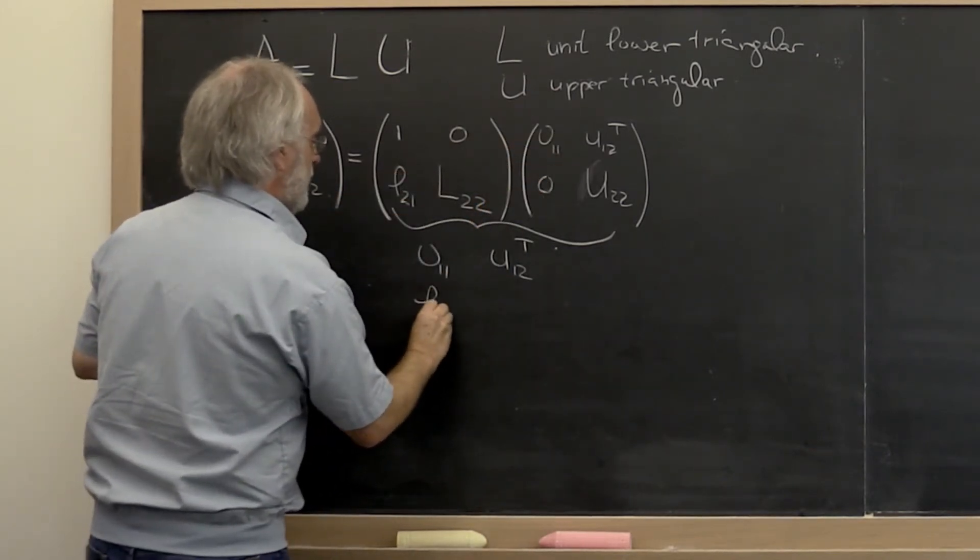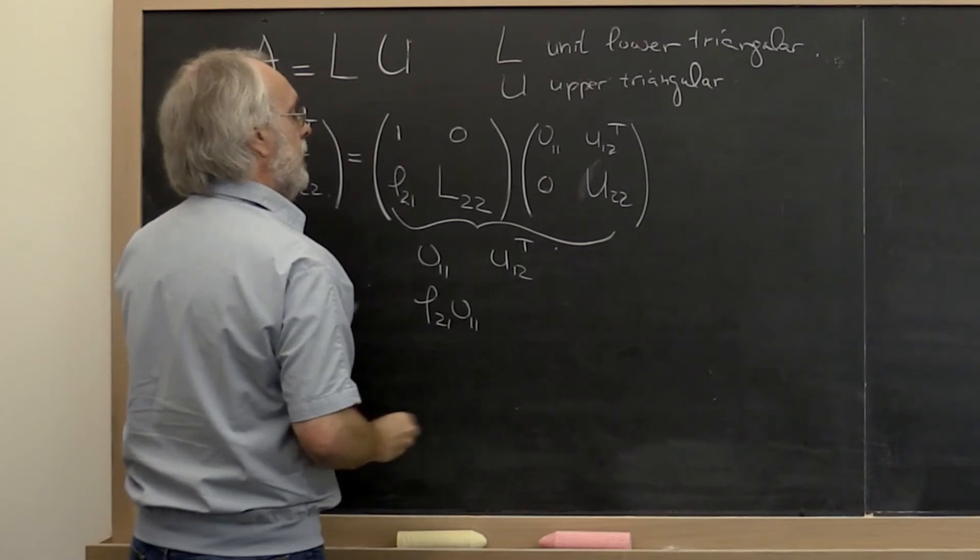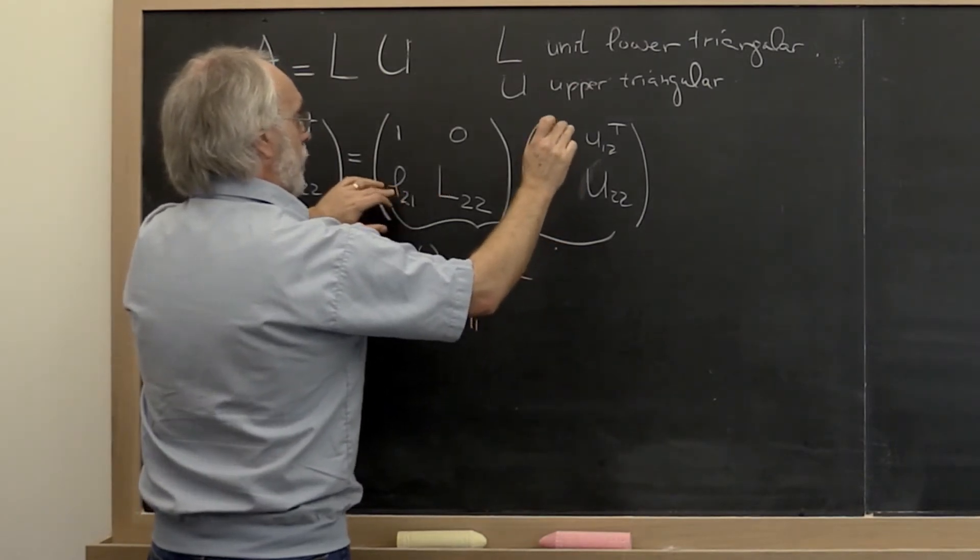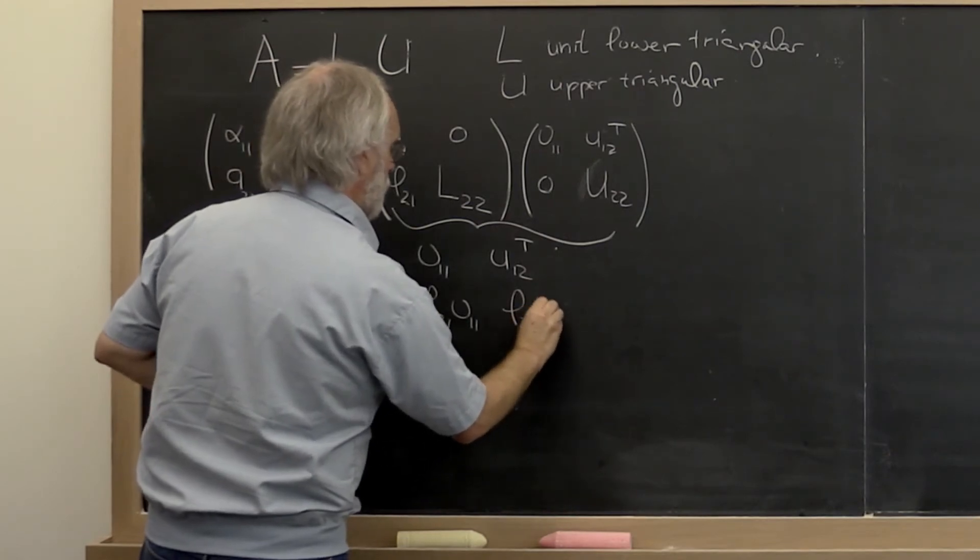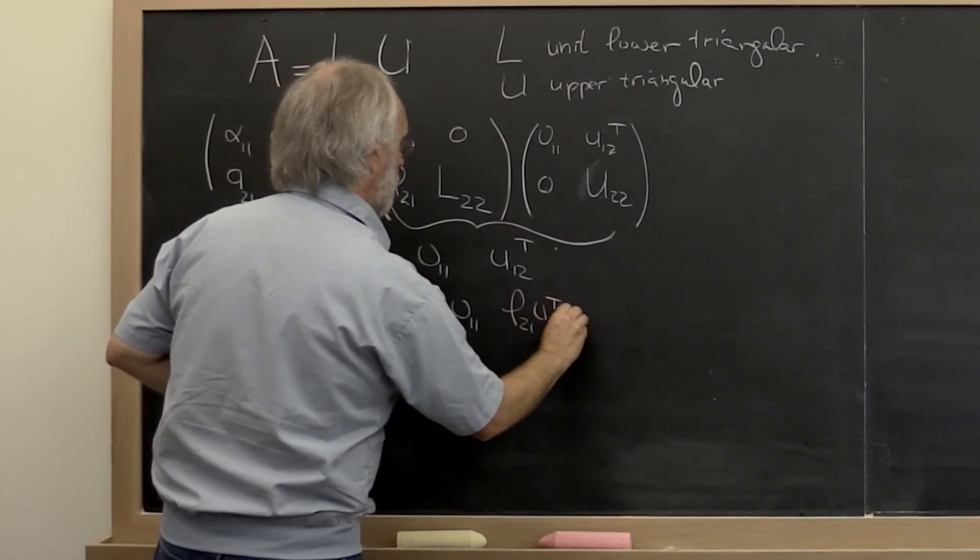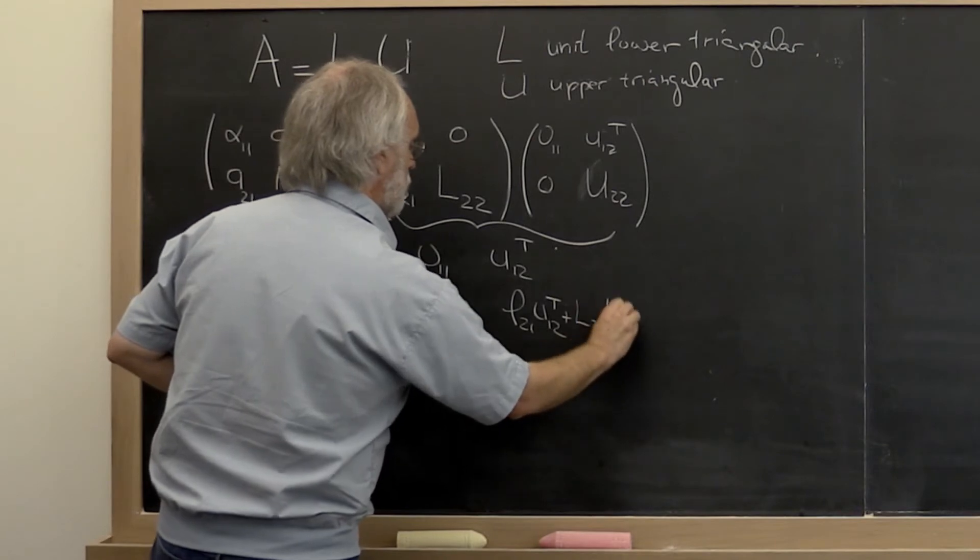It's this times that plus this times that, meaning we get L 2 1 times upsilon 1 1. And then it is this times that plus this times that, giving us L 2 1 times U 1 2 transpose plus L 2 2 times U 2 2.